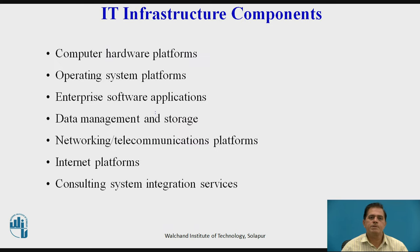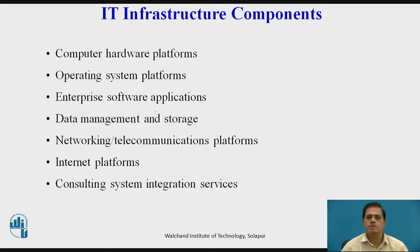The components of IT infrastructure are: first, computer hardware platform; second, OS platform; third, enterprise software applications; fourth, data management and storage; fifth, network or telecommunications platform; sixth, internet platform; and seventh, consulting and system integration services. These are the seven infrastructure components required to run enterprise systems.